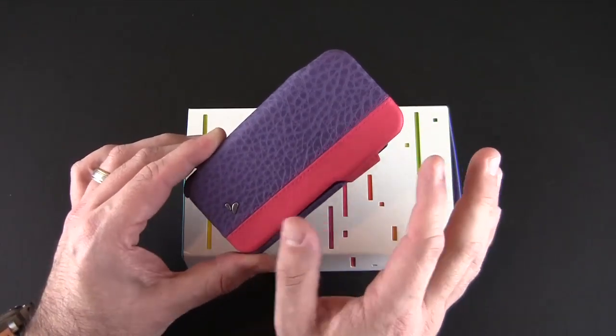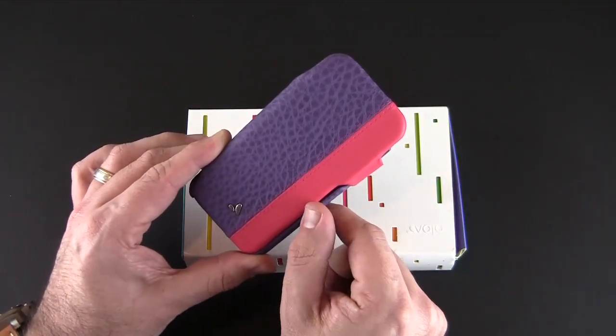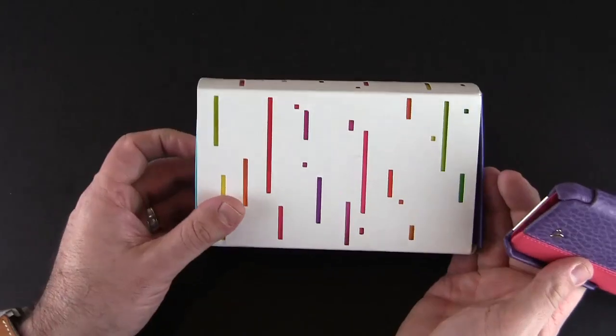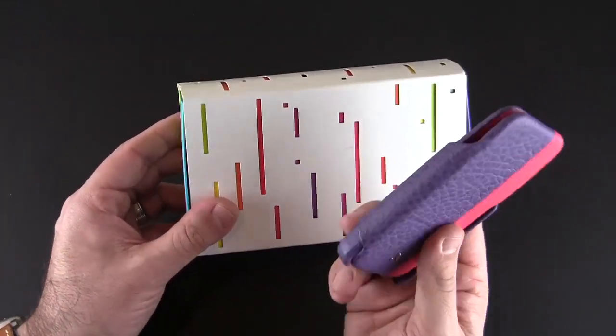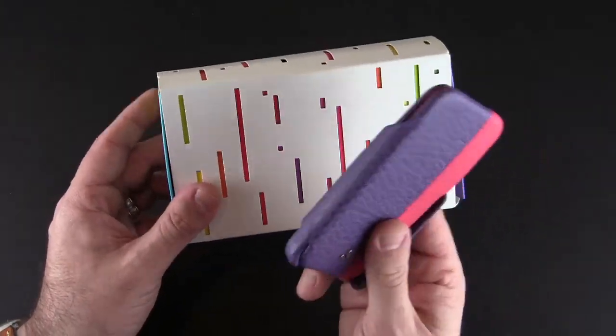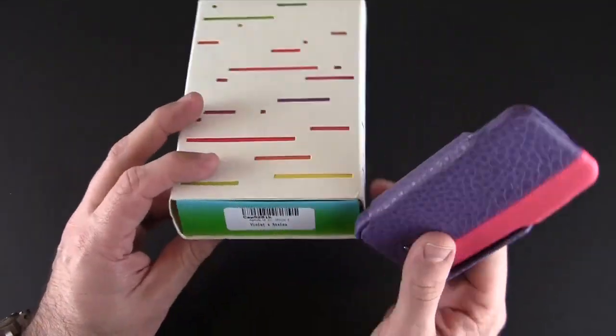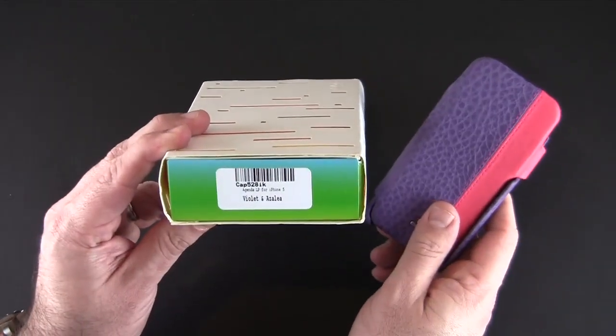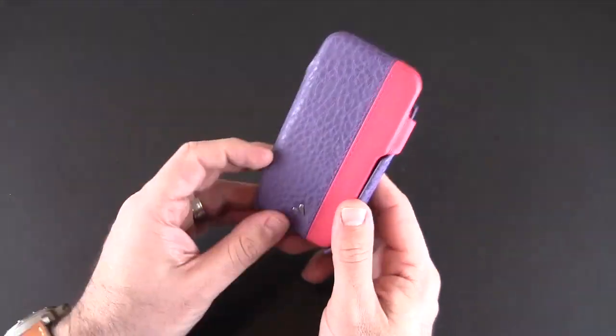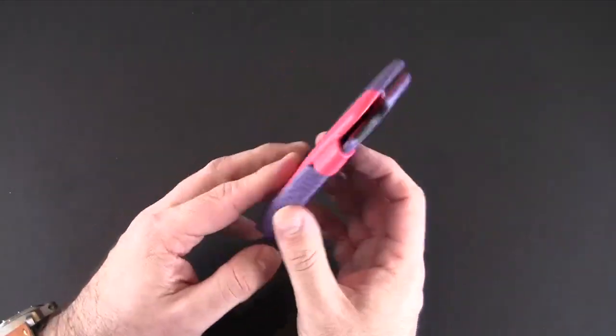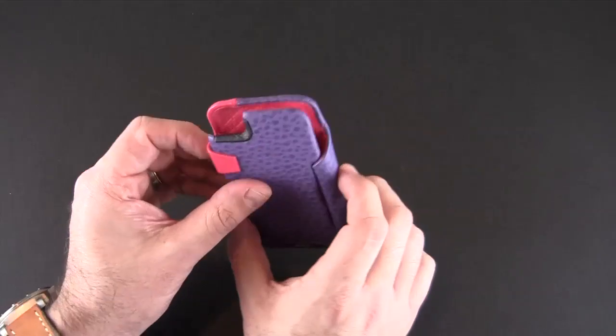Here's the box it comes with and you don't get anything in here other than the case itself. This wouldn't be the color that I'd personally choose but it's what I was sent and it's called violet and azalea, so it's kind of a pink and purple color. You can see now this is an agenda style case in that it has a front flap that flips open.